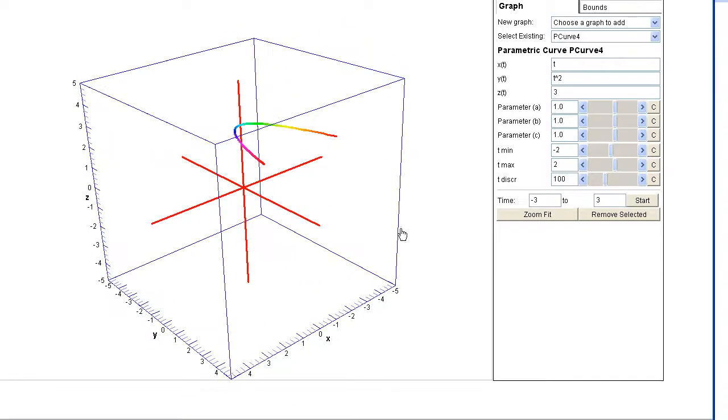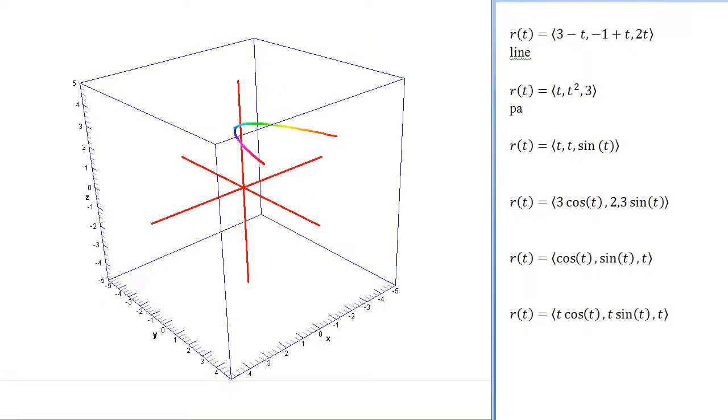Right, so this is all happening at a constant value of z. And so this is simply a parabola hanging out at z equals 3.